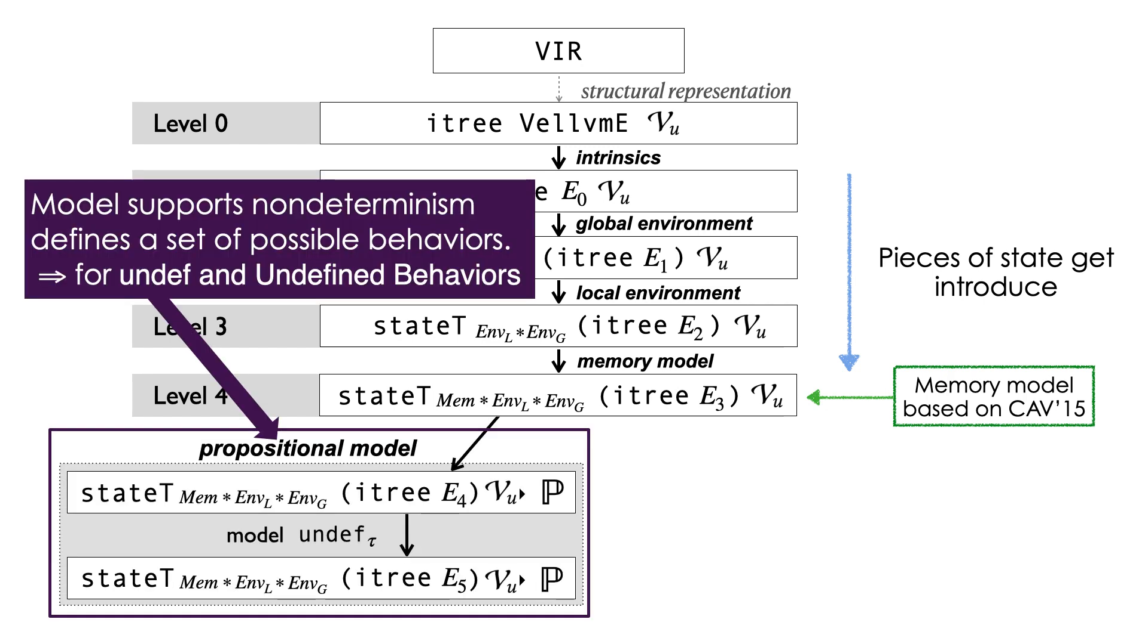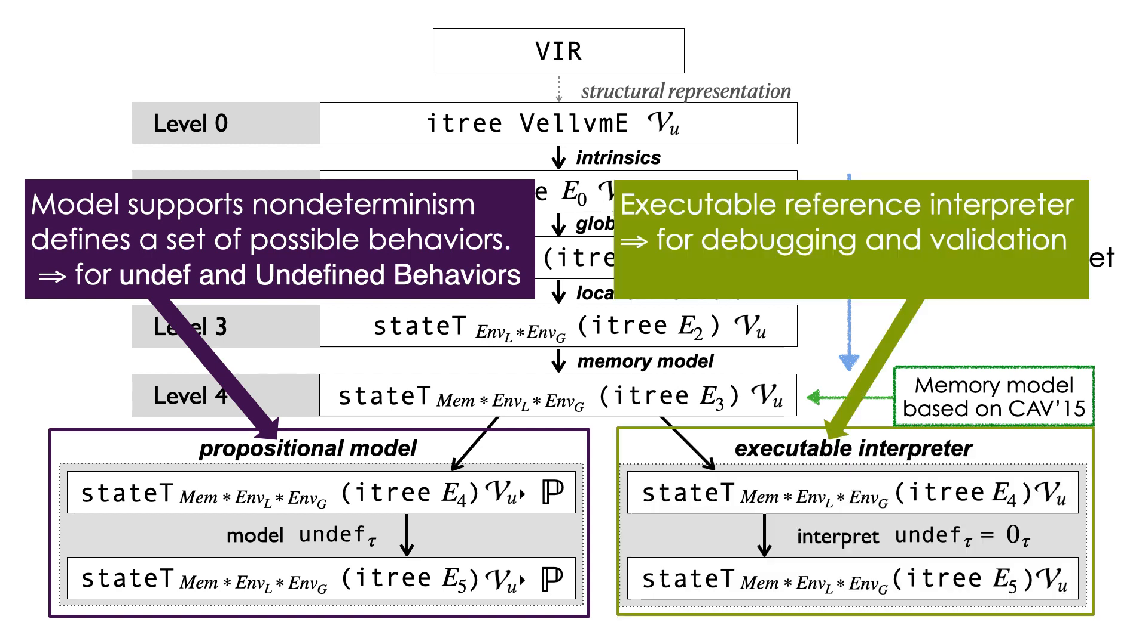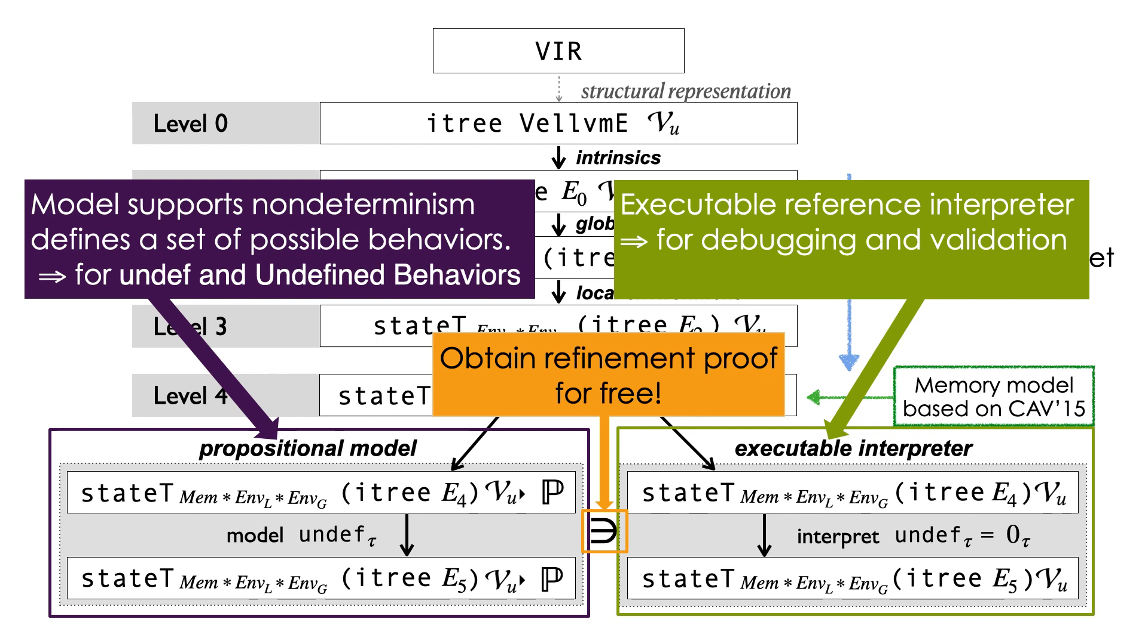At this stage, an interesting phenomenon happens. It turns out that LLVM IR, because of so-called under-defined and undefined behaviors, is not a deterministic language. We therefore capture in a propositional model all of the legal executions by defining two specific handlers. However, I told you that we want it to be executable, so sharing all of the semantics except for these two handlers, we defined two alternative handlers that are executable, and that will be used in order to get a reference interpreter. Because we share so much of the semantics between both of the executable interpreters and the propositional model, we essentially get for free a refinement proof showing that the executable interpreters exhibit a legal behavior with respect to the model.